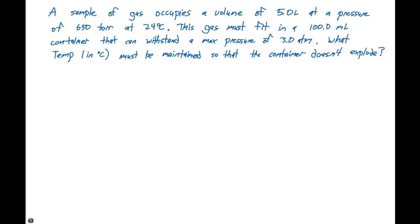In our next example problem, we state the following. A sample of gas occupies a volume of 5.0 liters at a pressure of 650 Torr at 24 degrees Celsius. This gas must fit into a 100.0 milliliter container that can withstand a maximum pressure of 3 atmospheres. What temperature in degrees Celsius must be maintained so the container doesn't explode?